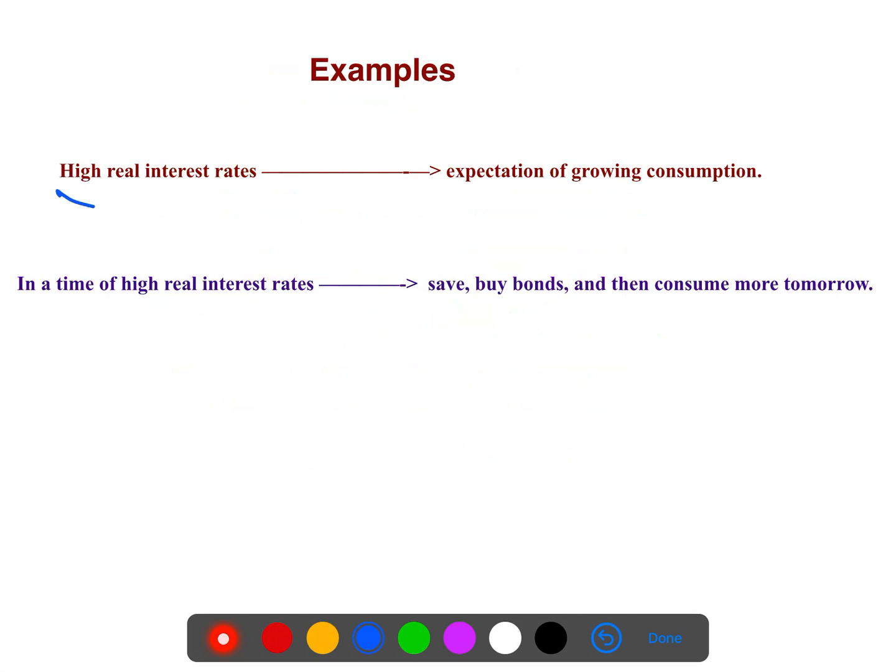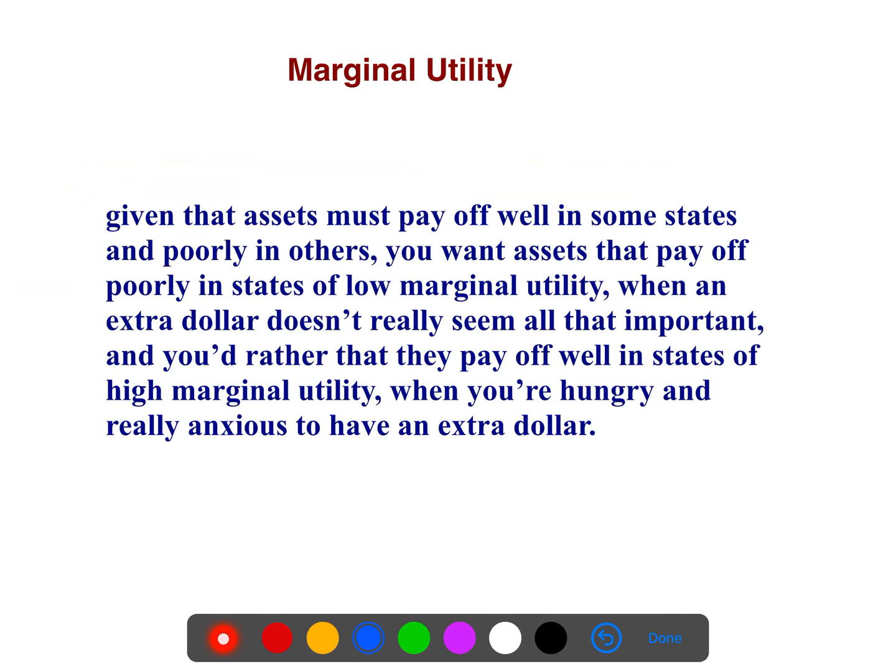When you have high real interest rates - I mean, you have removed the inflation, so you have a real interest rate - the expectation of growing consumption means that in future you will have growing consumption, not now. In a time of high real interest rate, people go and save in banks and buy bonds because they expect growing consumption tomorrow and in the future.